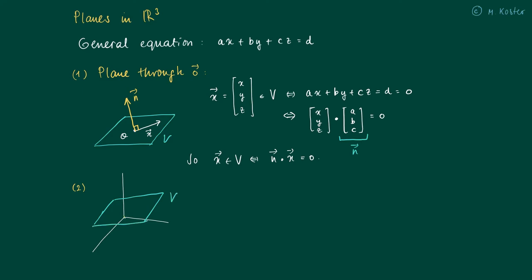The second, more general case: look at a plane and let p be a vector pointing at some point in the plane, and x is an arbitrary vector in the plane. Then we can look at the difference vector x - p.